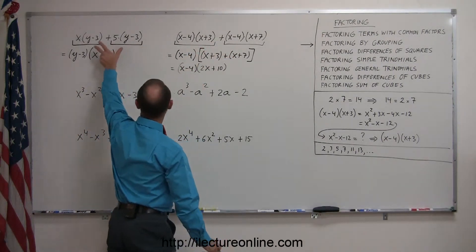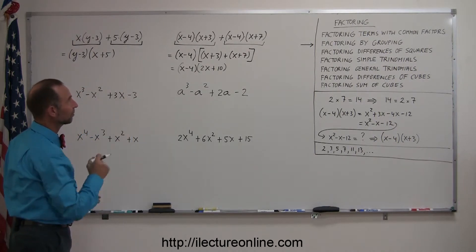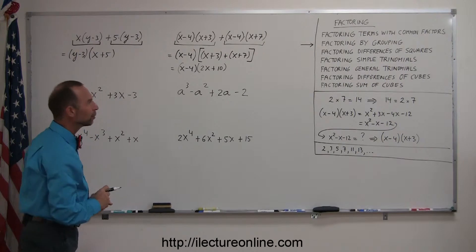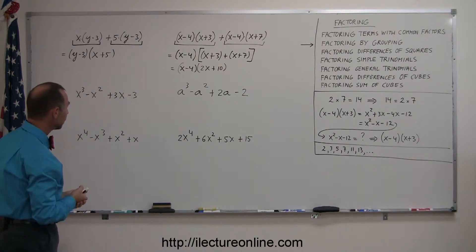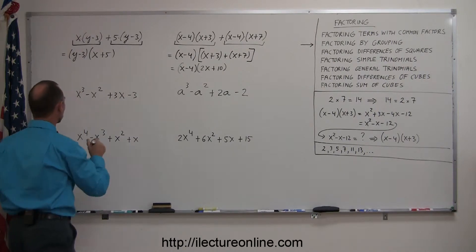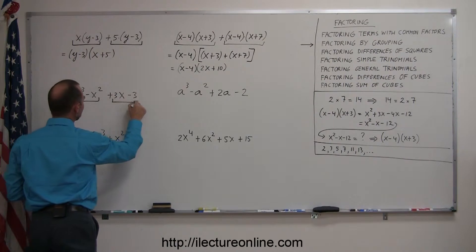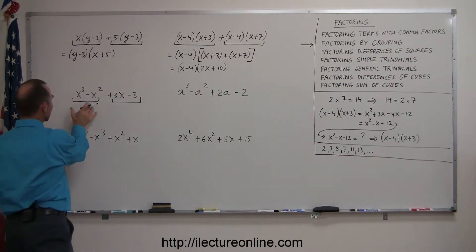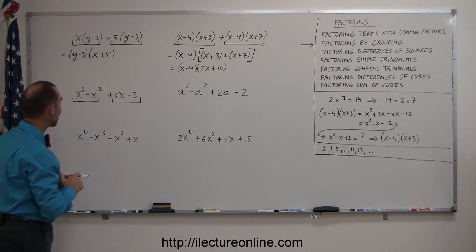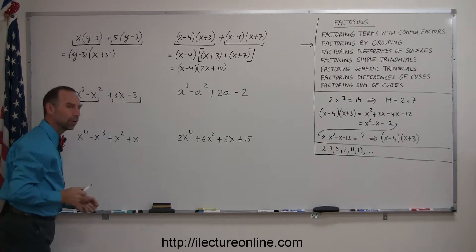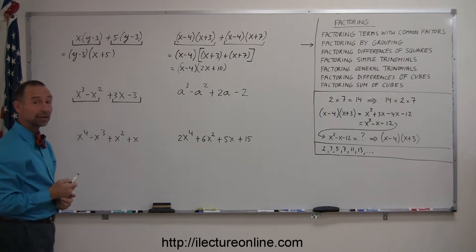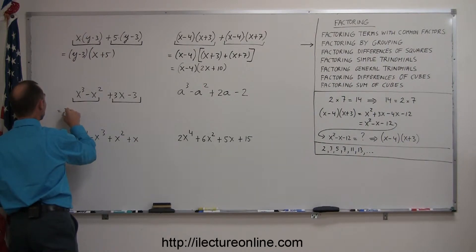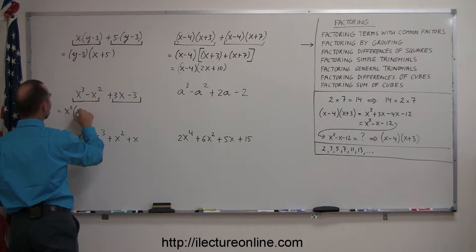Now that we know how to find common factors in algebraic expressions like those, we're ready to tackle factoring by grouping. If you end up with an expression that has more than three terms — in this case four terms — you're able to group several of those terms together. Group the first two terms together and the next two together, then look for common factors within each group. Looking at the first two terms, I can see they both have an x, so I can factor out x squared — giving me x squared times (x minus 1).